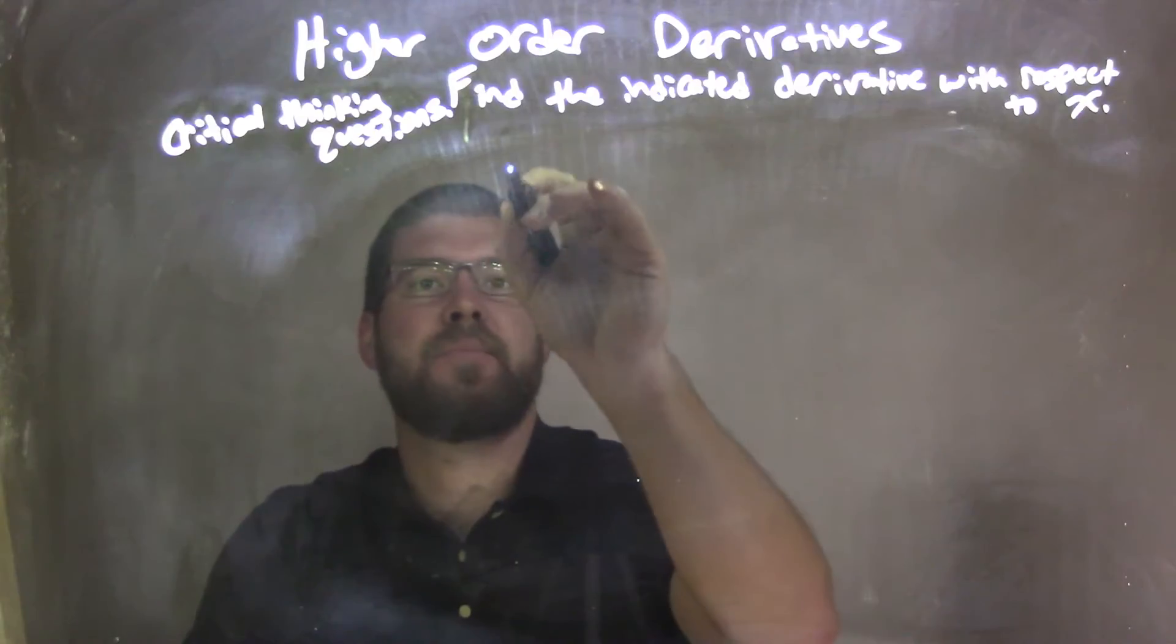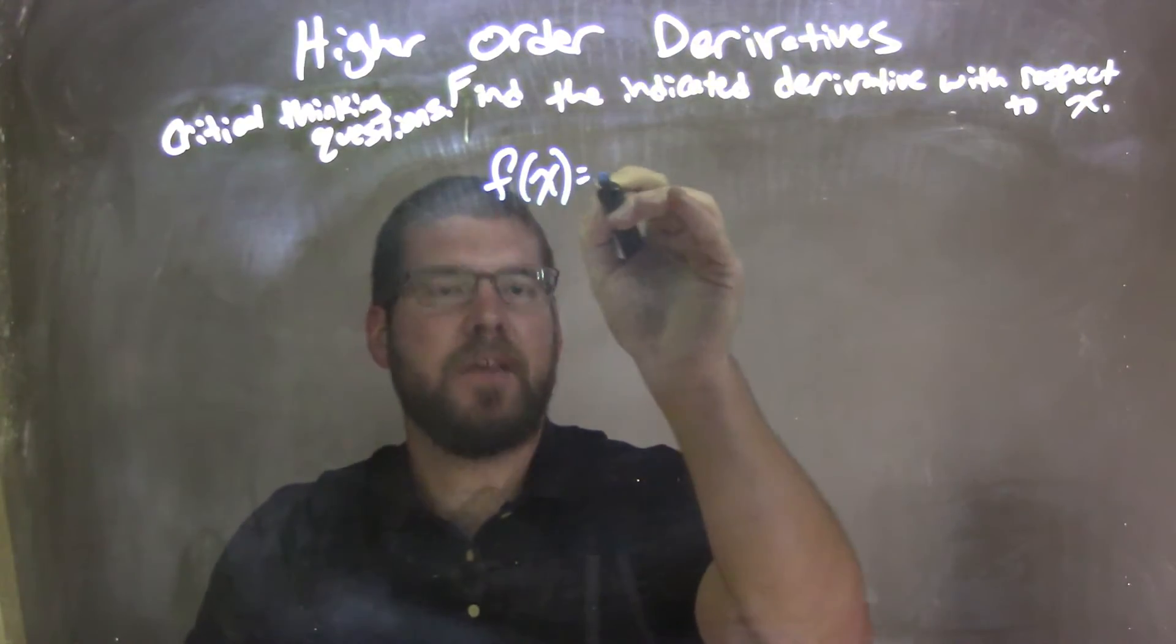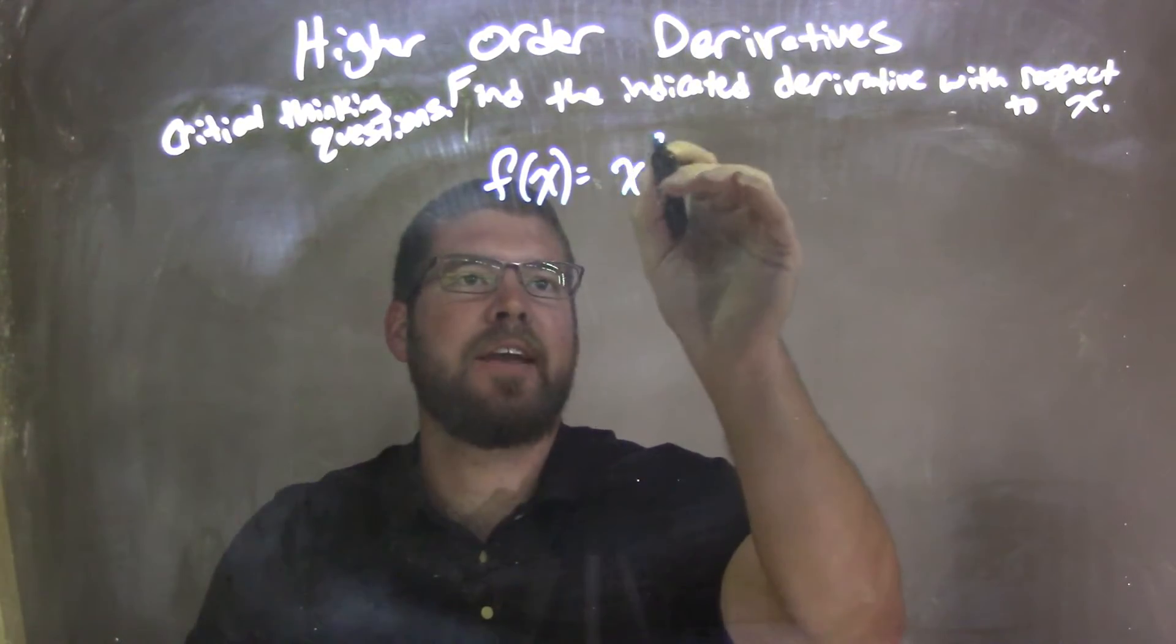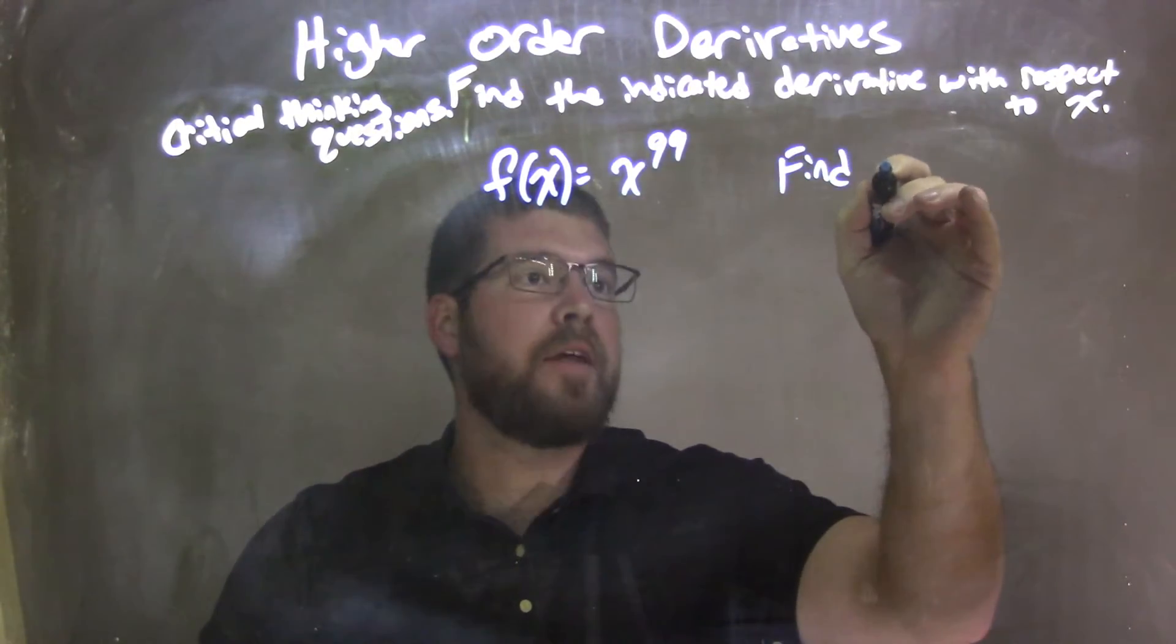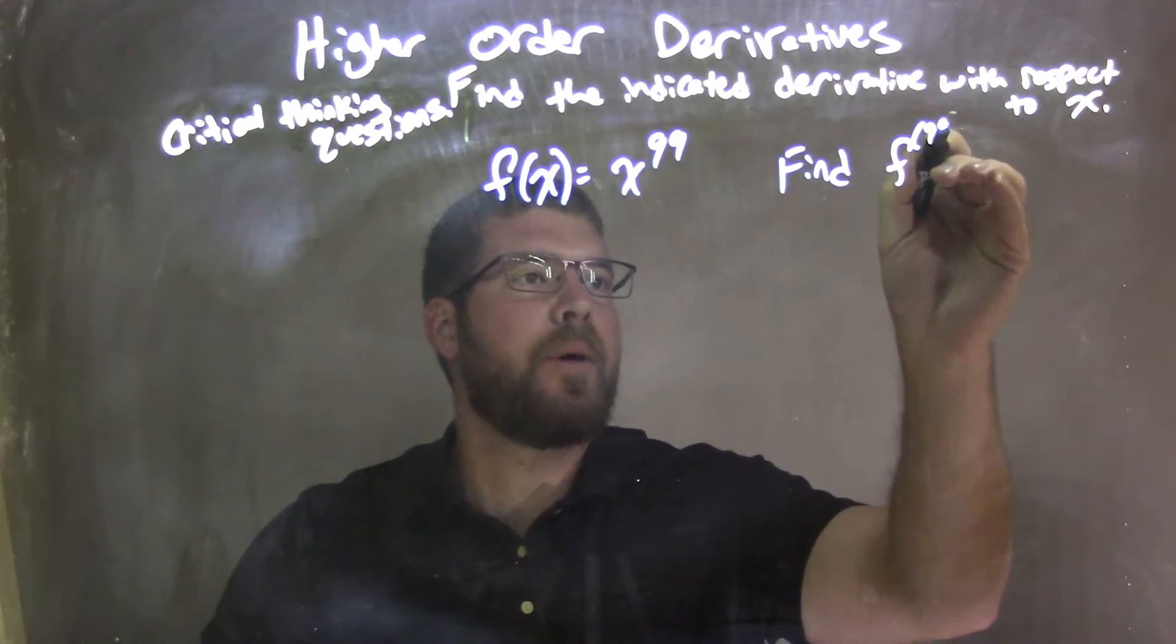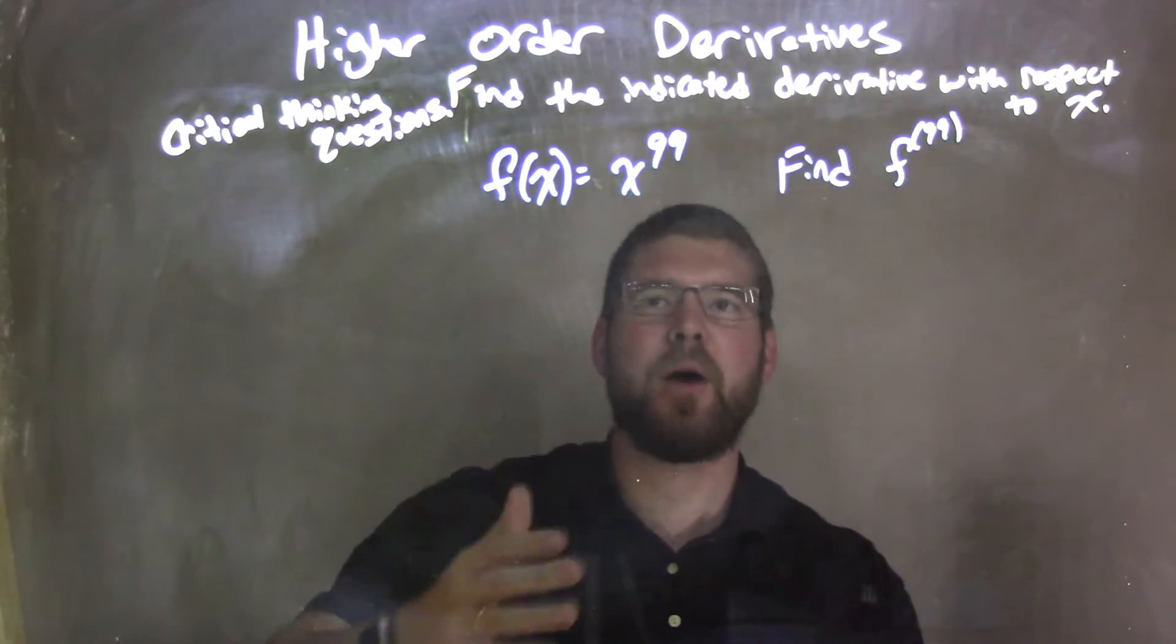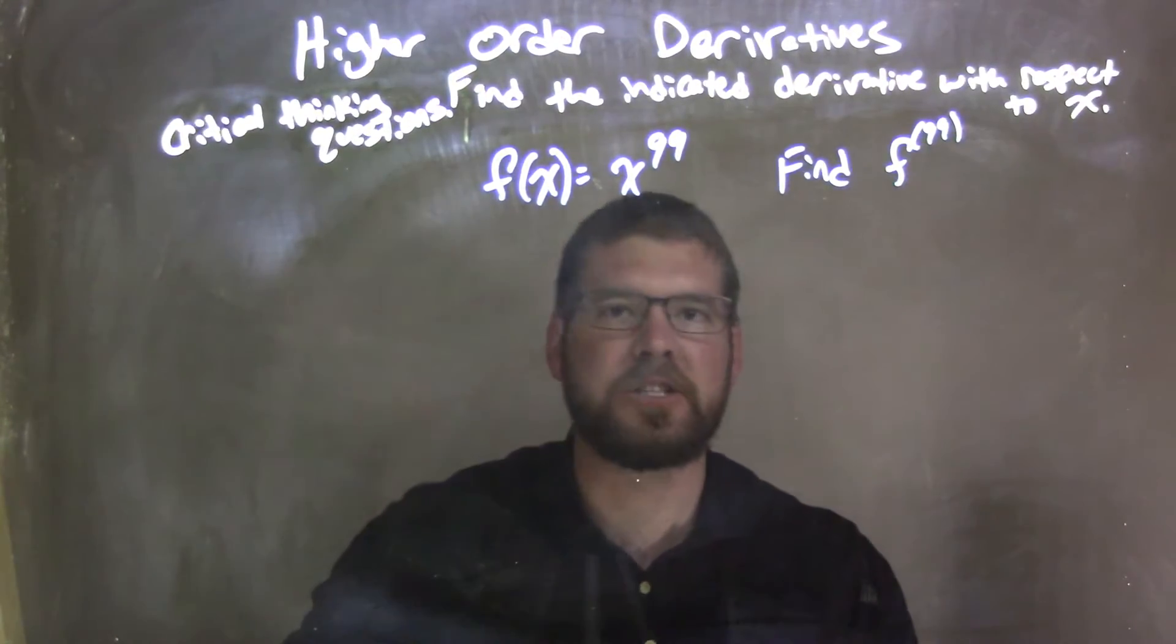So if I was given this function, f of x equals x to the 99th power, and we want to find the 99th derivative. Remember, this isn't f to the 99th power, it's the 99th derivative of our function f.